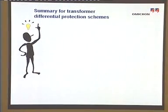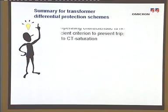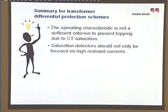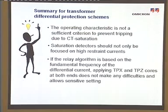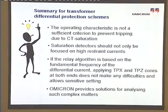As a conclusion, the following essential findings can be highlighted. The operating characteristic is not sufficient on its own to prevent tripping due to CT saturation. Saturation detectors should not only be focused on high-restraint currents. If the relay algorithm is based on the fundamental frequency of the differential current, applying TPX and TPZ cores at both ends does not create any difficulties and allows sensitive setting. Omicron provides solutions for analyzing and testing such complex situations.